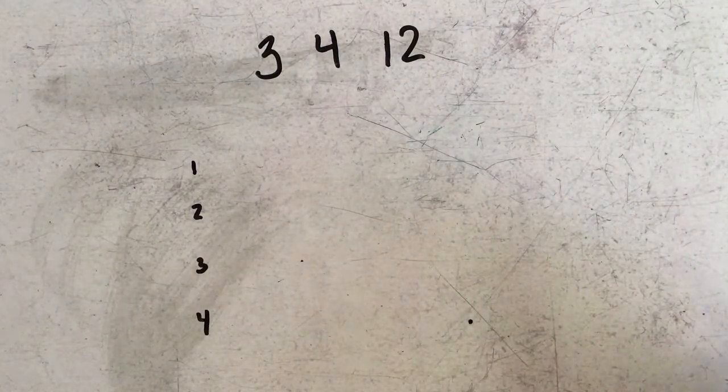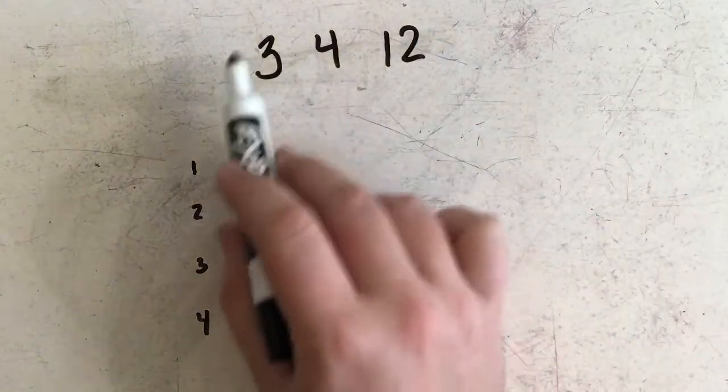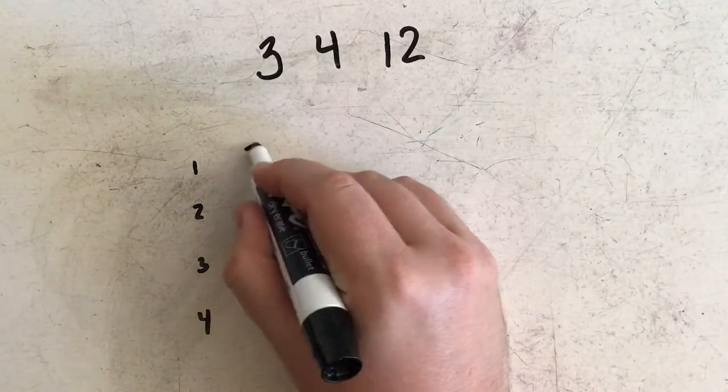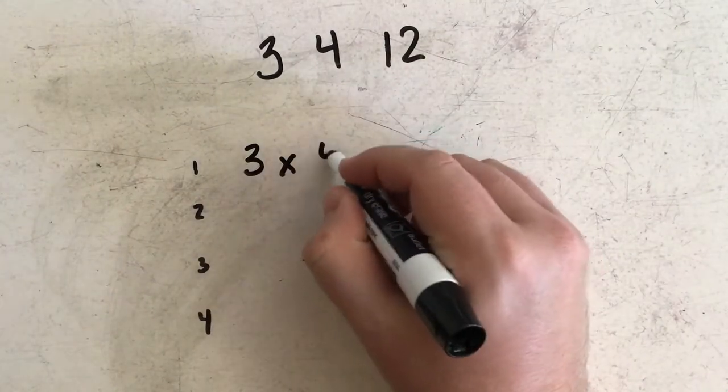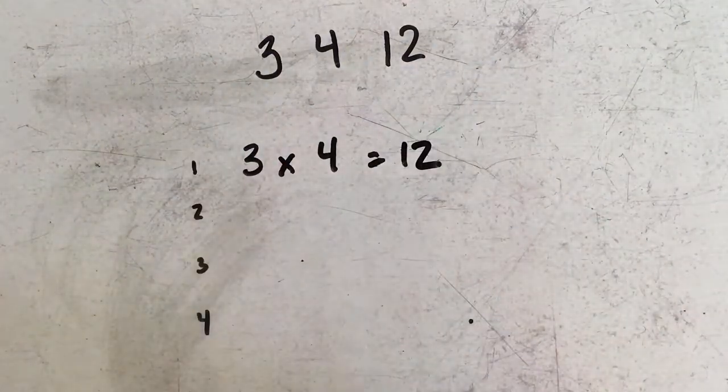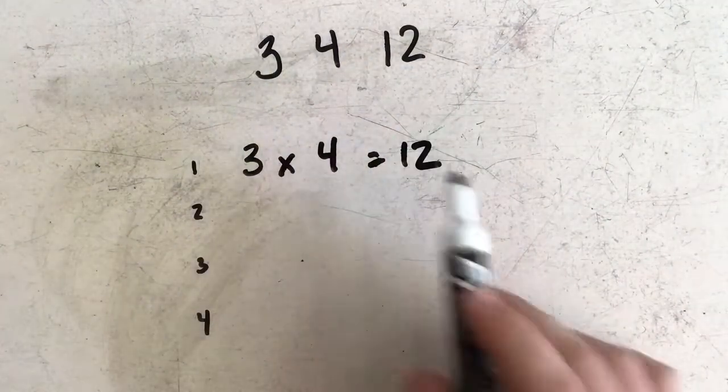We're going to start with multiplication. So if I'm thinking about 3, 4, and 12 in multiplication, I can say that 3 times 4 is equal to 12. That's one number sentence that I can write with the numbers 3, 4, and 12.